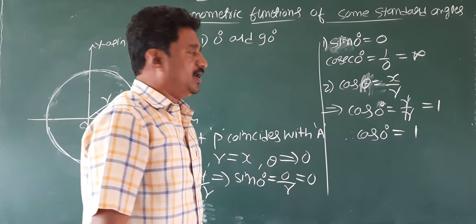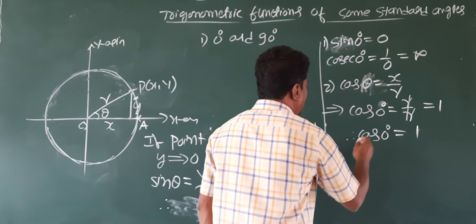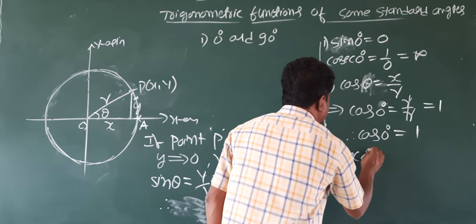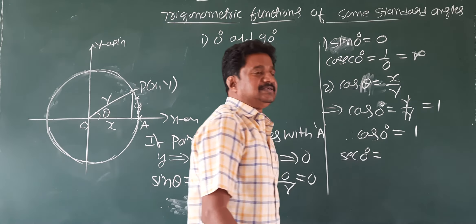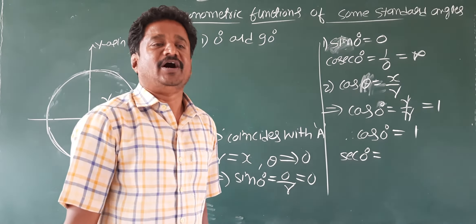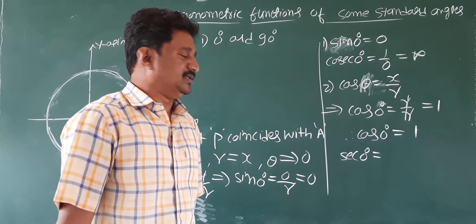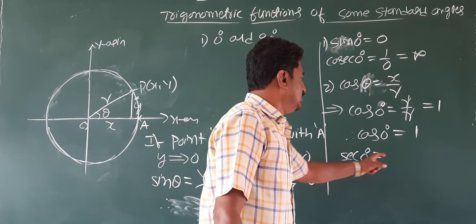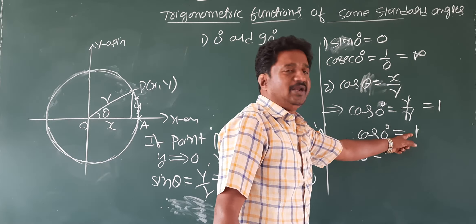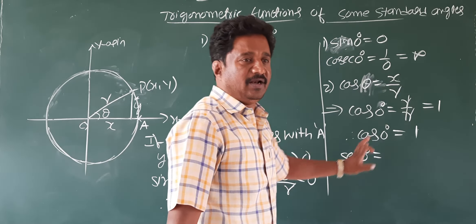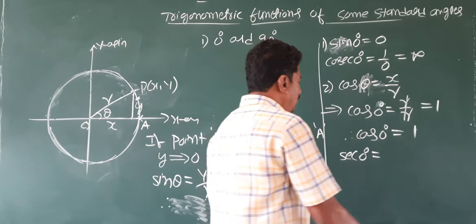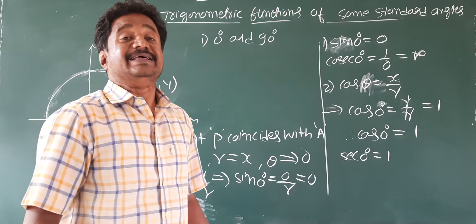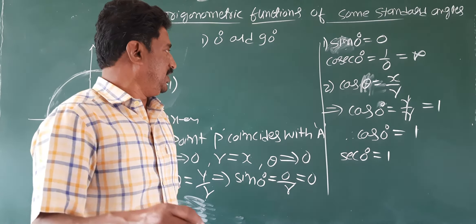Reciprocal of cos is secant. So secant 0 degree is the reciprocal of cos 0 degree, which is 1 by 1. Reciprocal of 1 is 1 only. So secant 0 degree is 1.